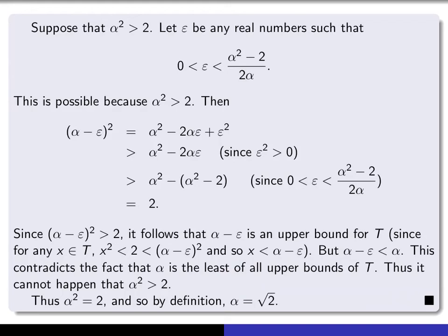Now suppose alpha squared is bigger than 2. I'm going to show I can make alpha a little bit smaller and still have a square bigger than 2. Let epsilon be any real number between 0 and (alpha² − 2) / (2·alpha). Since alpha squared is bigger than 2, this is a positive number, so we can find such an epsilon. We then do an estimate on (alpha − epsilon) squared, opening up the brackets: alpha squared minus 2·alpha·epsilon plus epsilon squared. This is bigger than alpha squared minus 2·alpha·epsilon, since epsilon squared is positive.